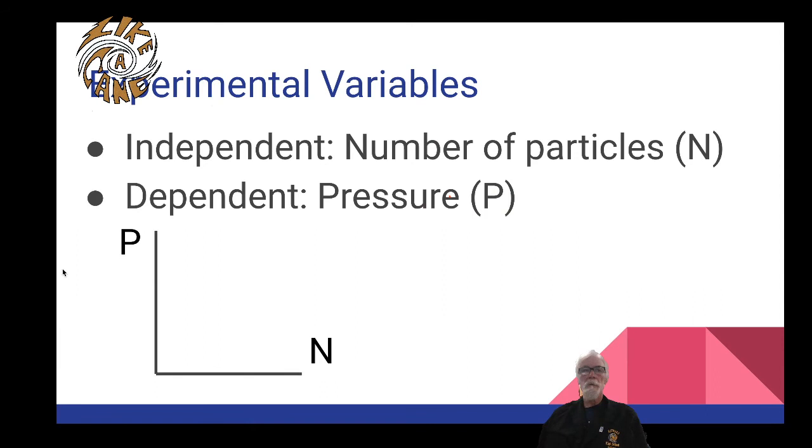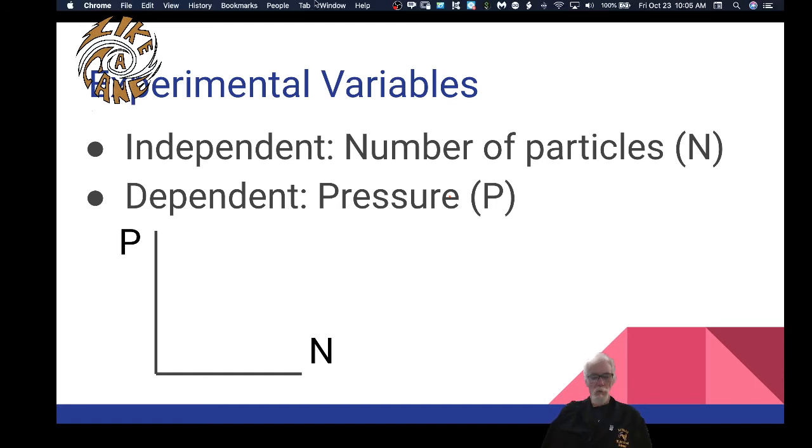In today's lab experiment we're going to investigate the relationship between pressure and the number of particles of gas that are in a container. We're going to vary the number of particles and then observe the pressure. So the number of particles is the independent variable and the pressure will be the dependent variable in our experiment.